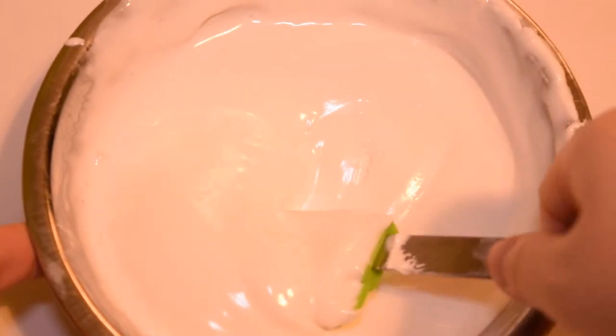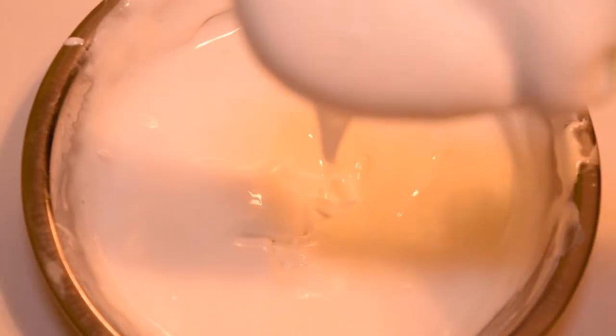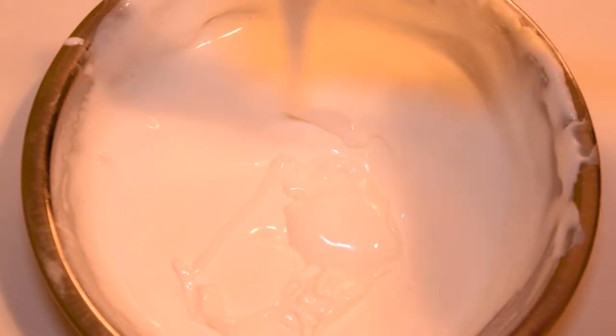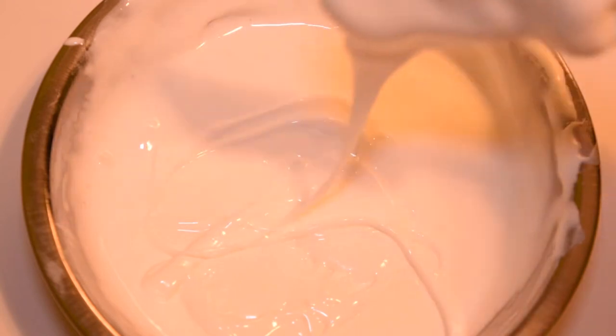You know you've reached flood consistency when your icing looks like this. You should be able to draw a figure eight with your spatula and within time the figure eight should disappear back into the royal icing. It shouldn't stay.